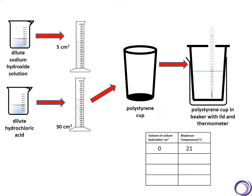I'm then going to measure out five centimeters cubed of sodium hydroxide, and we're going to add that to the beaker. And we're going to watch the temperature increase until it's reached its maximum temperature—that means it's not going to go up anymore. Then I'm going to record that result in my table.